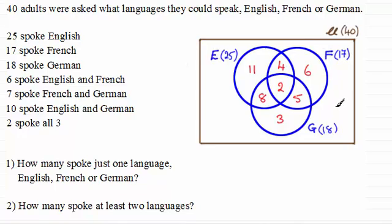And mustn't forget this outer region here. Always check that out. So if we add up all these numbers here, 11, four, six, eight, two, five and three, it comes to 39. So we've got 40 take away 39 leaves me with one person who doesn't speak English, French or German. So now we're in a position to answer these questions here.